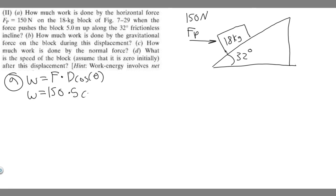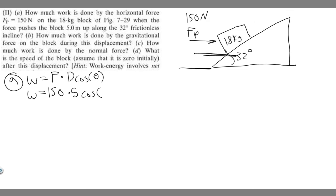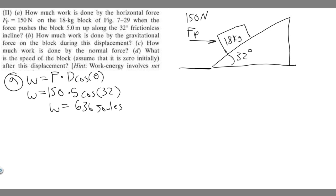Now for the cosine of theta — what's the angle between the force and the displacement? The force is horizontal, but the block is traveling up the incline at 32 degrees above horizontal. So the angle between the two is 32 degrees. That gives us 150 times 5 times cosine of 32, which equals 636 joules. So 636 joules is your answer to A.